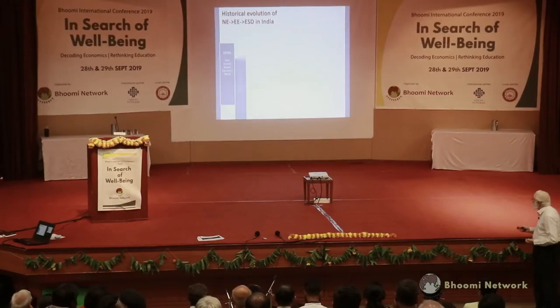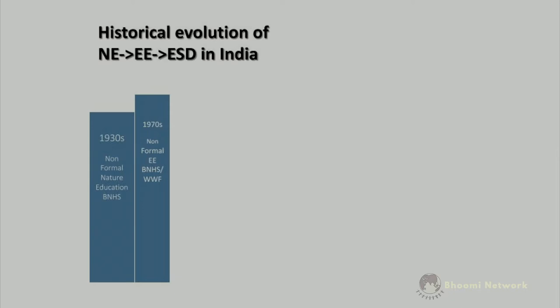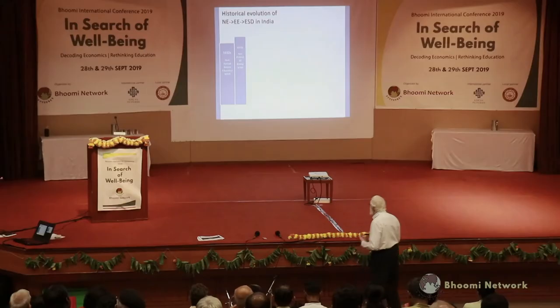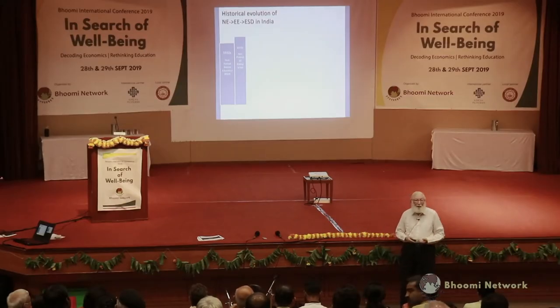That nature education was very alien and it was based on species identification. It suddenly became a taxonomic thing — from that landscape that I showed you, which anybody in a local area can appreciate, into something which is about: what is this bird, what is that call, what is this tree, where does it come from, and is it exotic or is it indigenous? It's a way of learning, but really it becomes a turn-off after a while. By the 1970s, we get more non-formal education, with organizations like BNHS and WWF coming up with nature trails and nature treks, which again were very taxonomic.